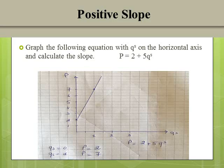Let's take the first exercise about positive slope: graph the following equation with qs on the horizontal axis and calculate the slope. The equation is p = 2 + 5qs. To find two points: for qs = 0, p = 2 + 5×0 = 2. For qs = 1, p = 2 + 5×1 = 7. So the first point is (0, 2) and the second point is (1, 7).